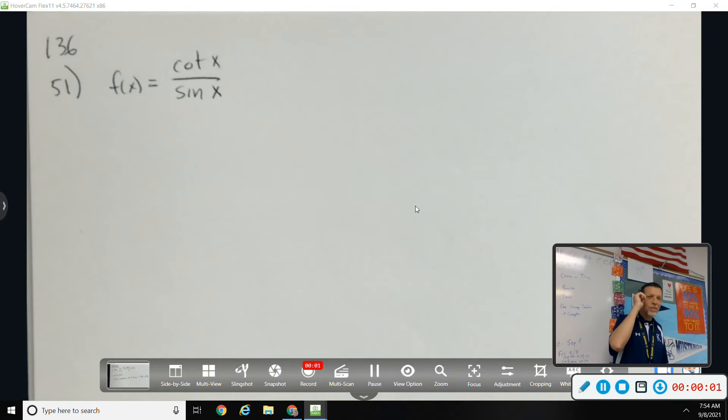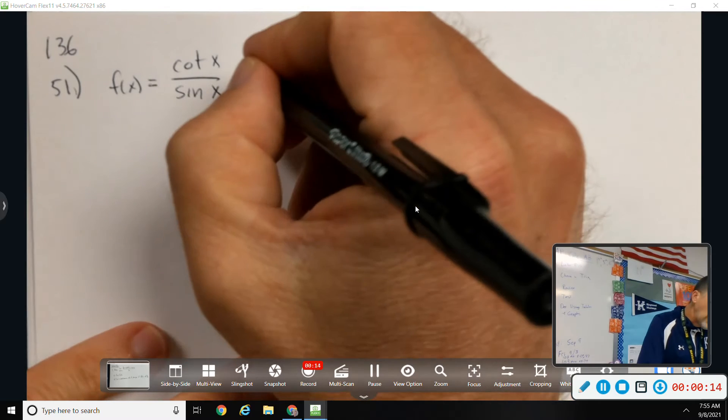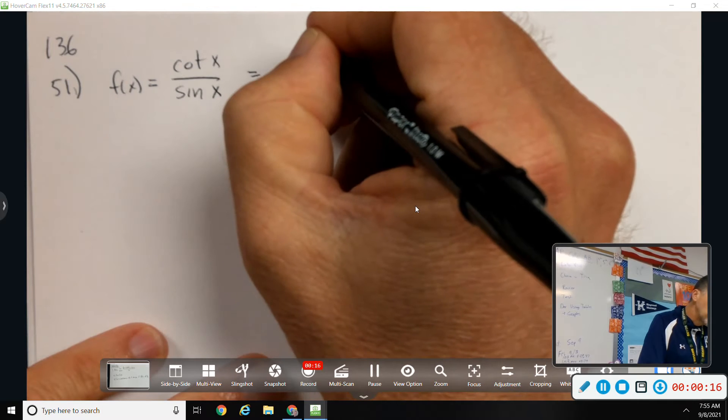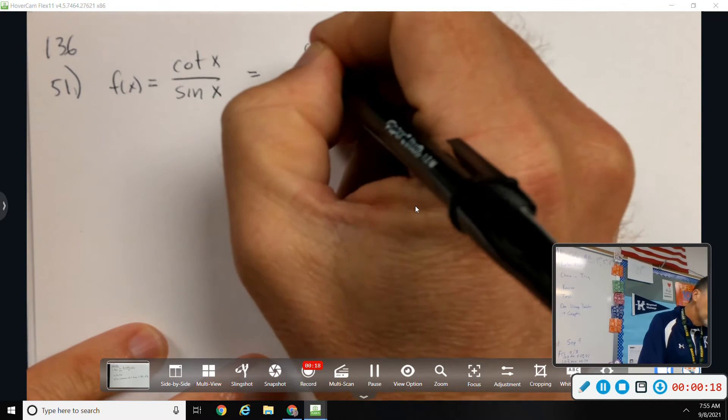Things I see with page 136, number 51. If you want to jump in right away, that's a quotient rule problem. I'm not sure this is the best move, but cotangent is cosine over sine.